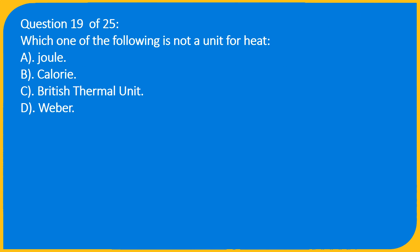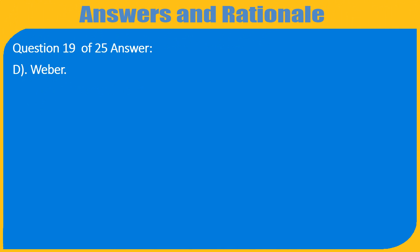Question 19 of 25: Which one of the following is NOT a unit for heat? A. Joule, B. Calorie, C. British thermal unit, D. Weber. Answer: D. Weber.